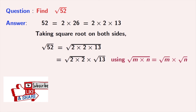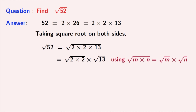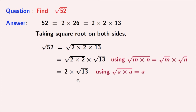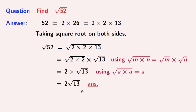Now, from the first square root we get 2, as we know that square root of a times a is equal to a. Here a is 2. And the second square root, that is root 13, remains the same. So we get 2 times root 13 as our answer.